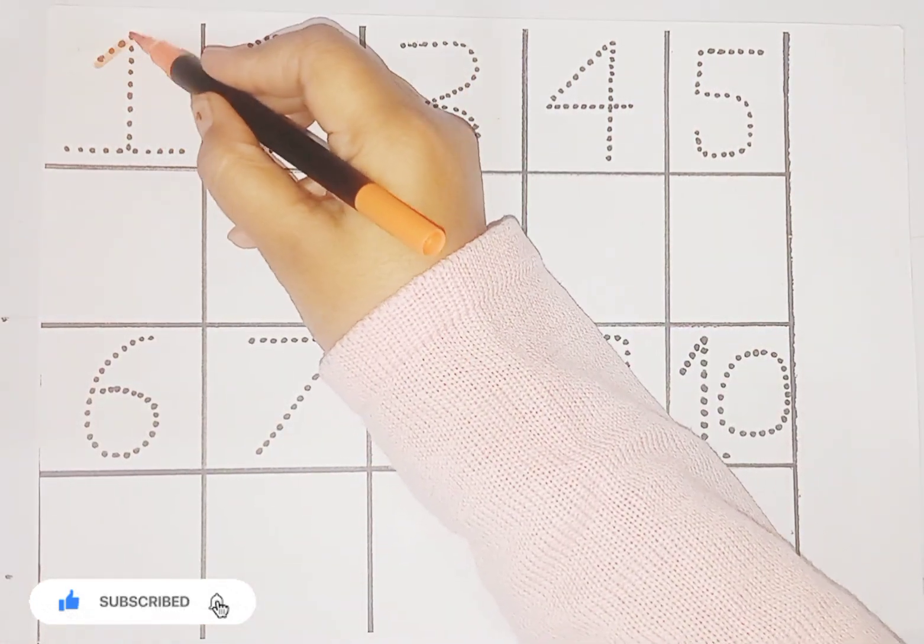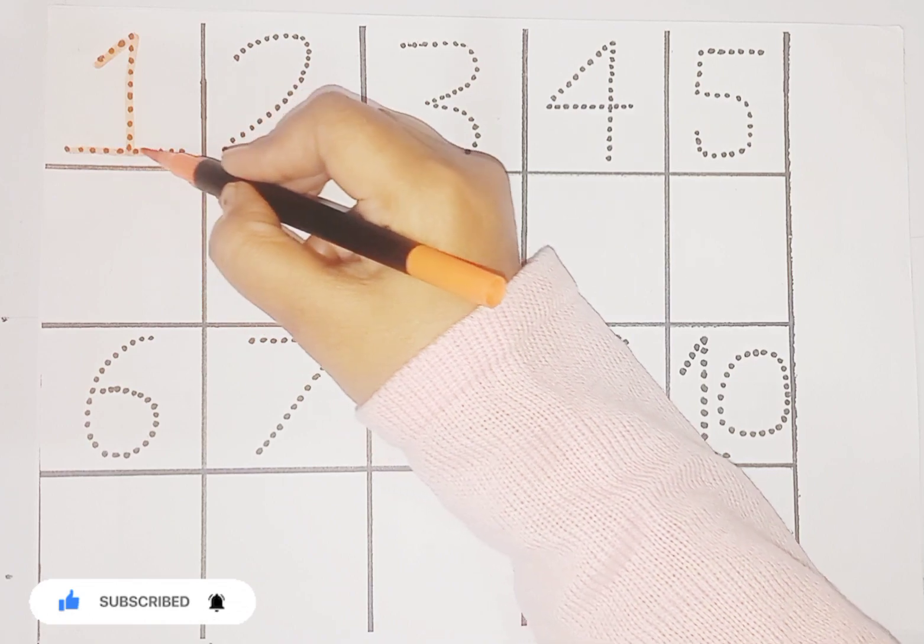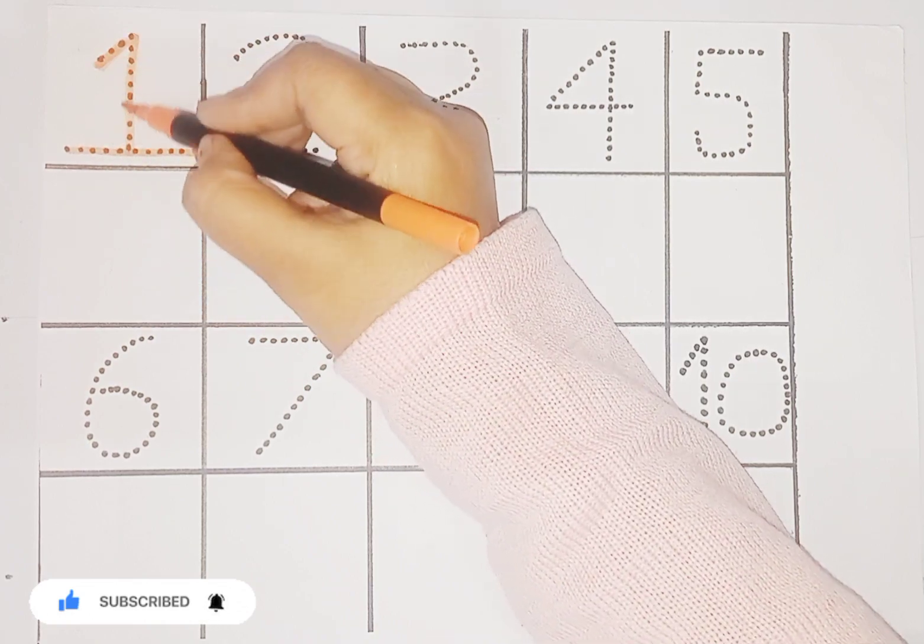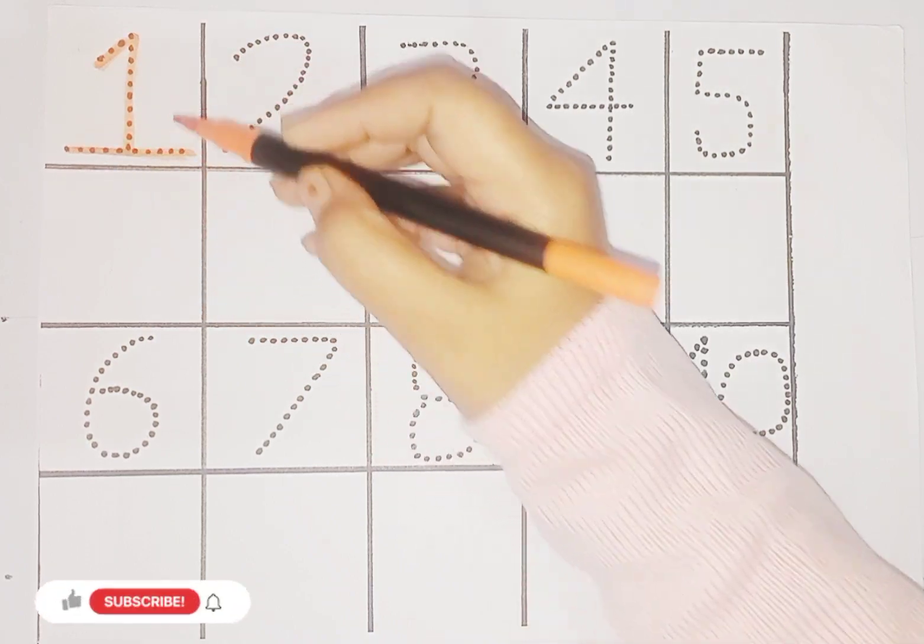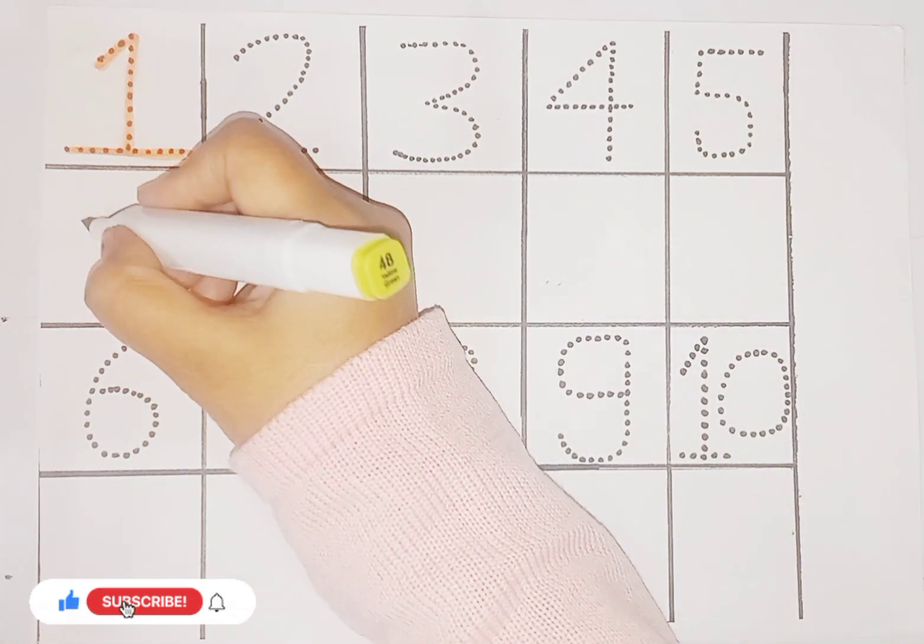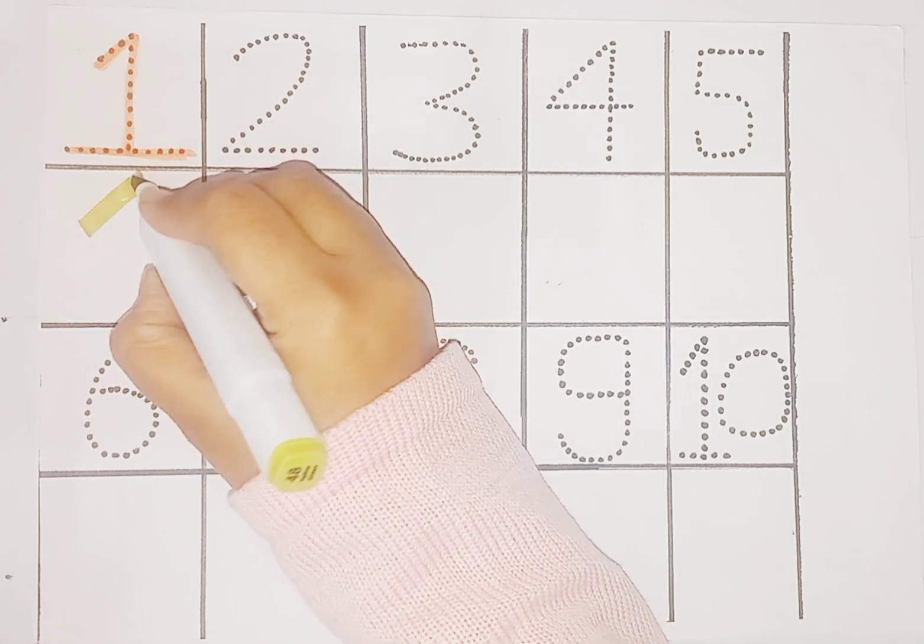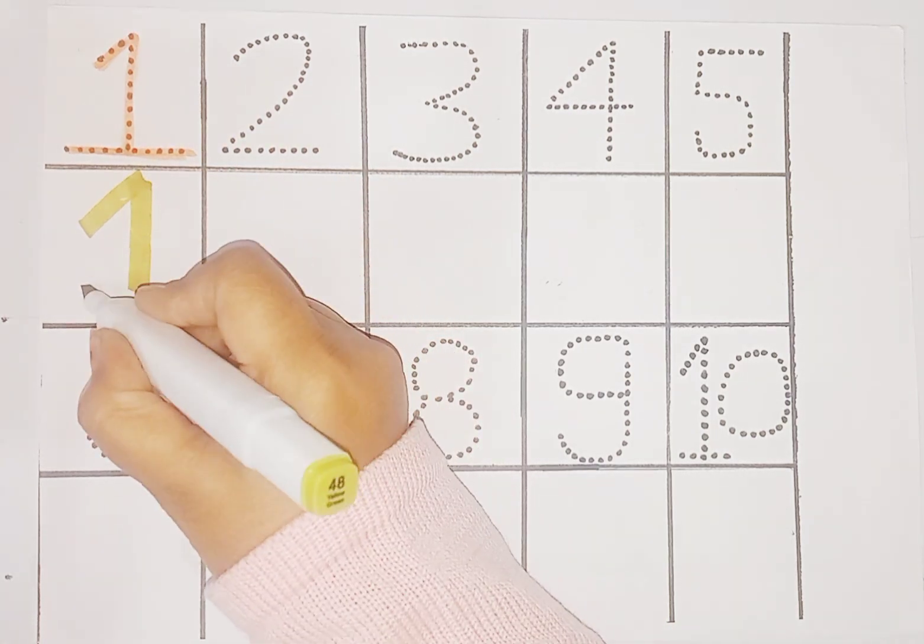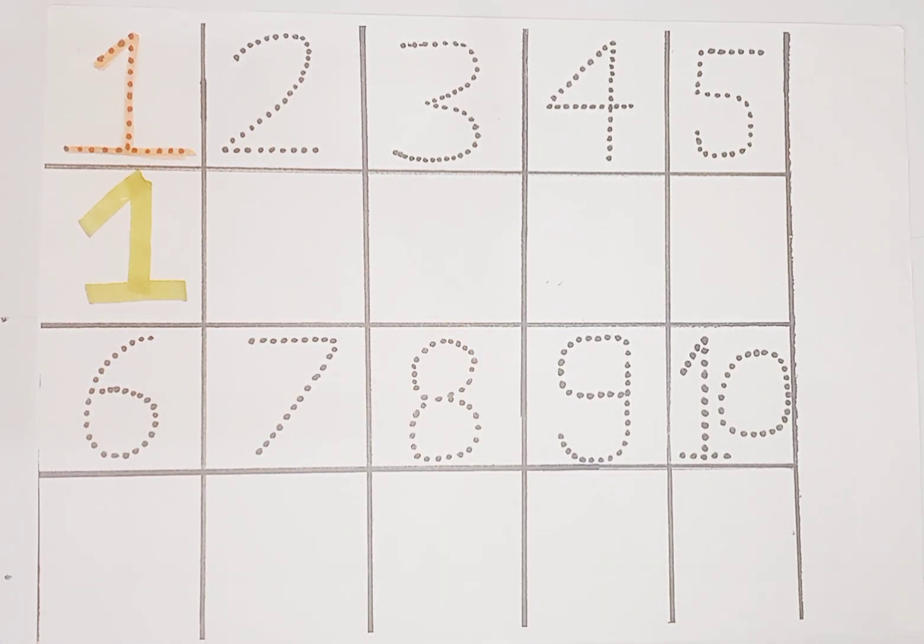1. This is number. This is number 1. Which number kids? This is number 1. And 1 is here.